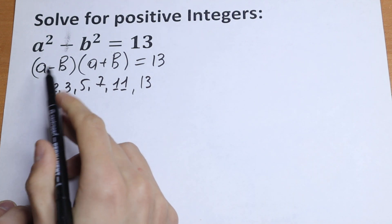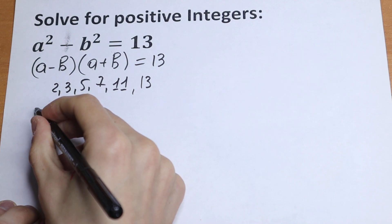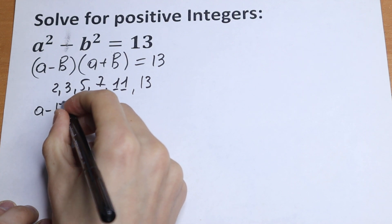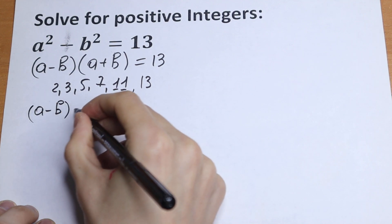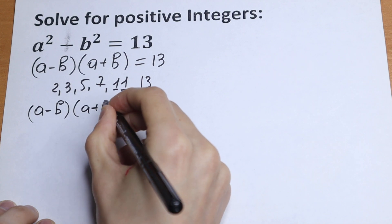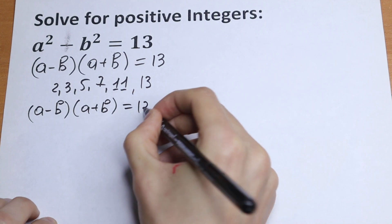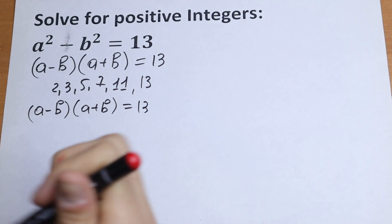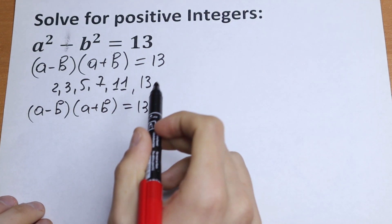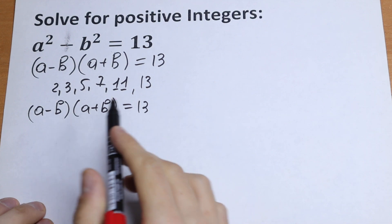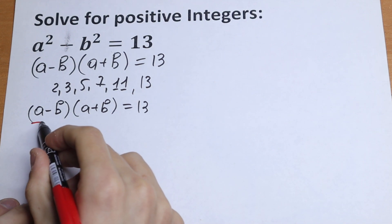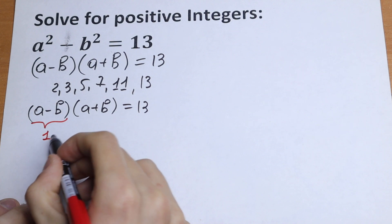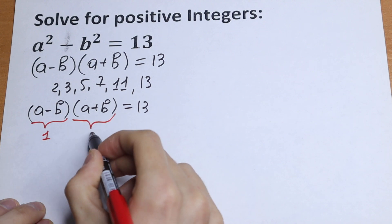And this will be our 1, so a minus b times a plus b. So how can I get this 13? As I mentioned before, we need to combine these prime numbers to get 13. And the one and only case will be when this equals 1 and this equals 13.